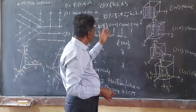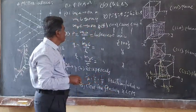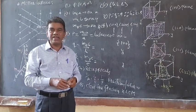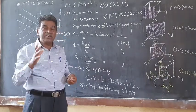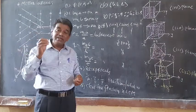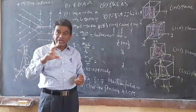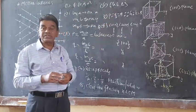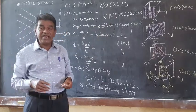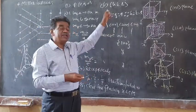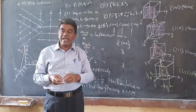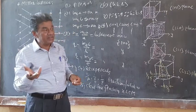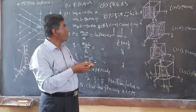So this is the procedure to obtain Miller indices. Miller indices are defined as the reciprocal of the fractional intercepts made by that plane, reduced to the smallest set of whole numbers. Now we will see examples by considering a few planes in the cubic crystal structure.